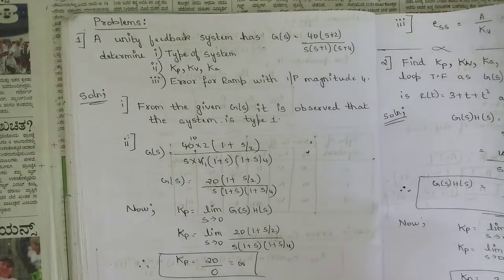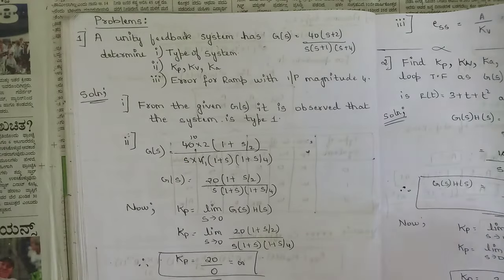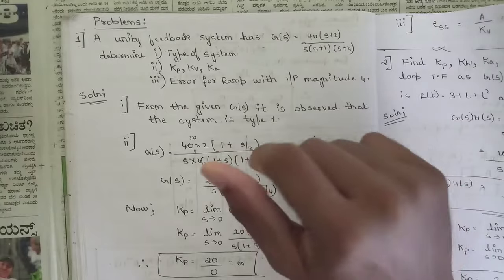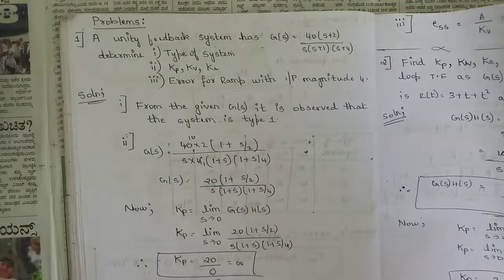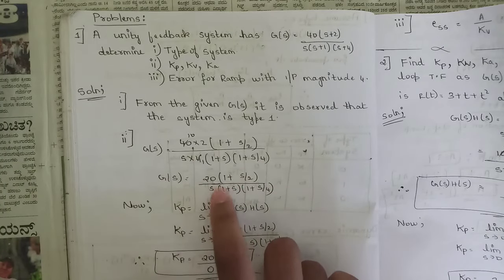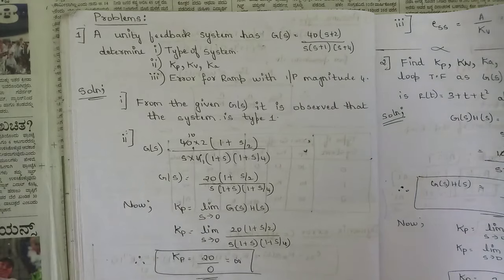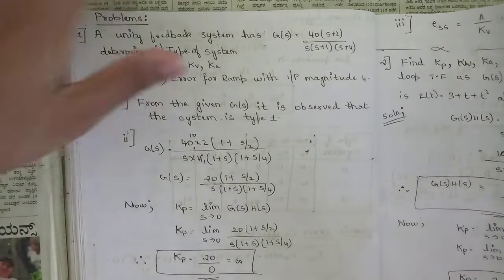In problems, a transfer function is given along with an input, and you must determine the type of system, calculate Kp, Kv, Ka, and the steady state error. First represent the transfer function in general form, then check the power of s in the denominator to determine the system type, and apply the appropriate error coefficient formula.